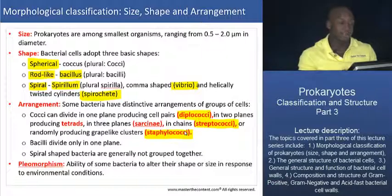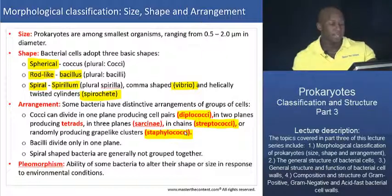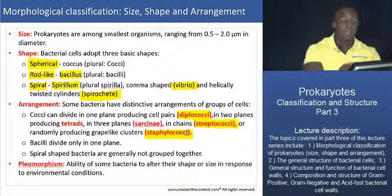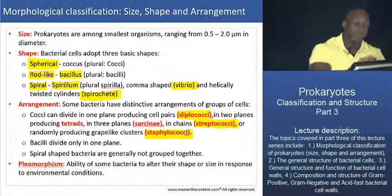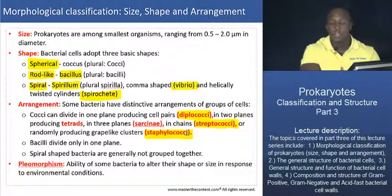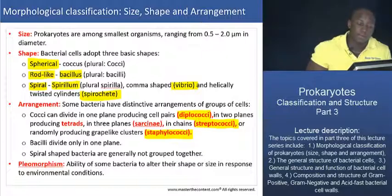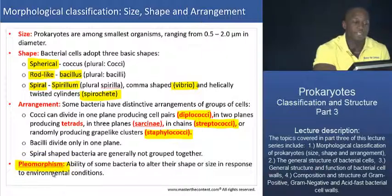Before we head to the next slide, I wanted to define an important term: pleomorphism. Some bacteria actually display a pretty unique property — they change or alter their shape and size in response to changes in environmental conditions. That phenomenon, in which bacterial cells change their morphology — their shape or their size — because of their environment, is referred to as pleomorphism. It is seen in quite a number of different bacterial species.